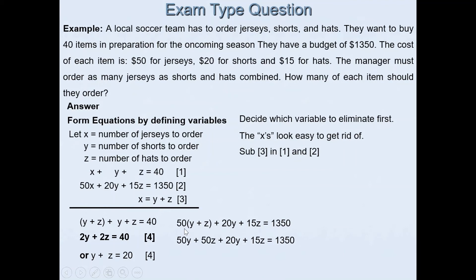Then we'll expand and simplify. 50 times y is 50y, 50 times z is 50z, plus 20y + 15z = 1350. Combine like terms. That gives you 50y + 20y which is 70y, plus 65z = 1350. This is our fifth equation.